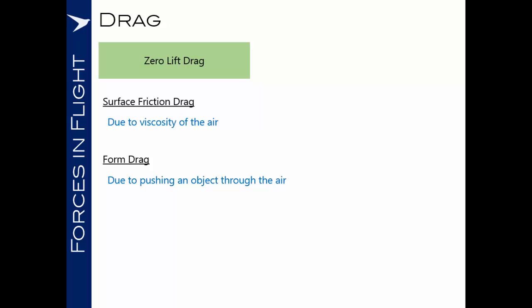The second form of zero lift drag is form drag. As we push an object through the air, the frontal surface area will cause a resistance of the air as the air is forced to move out of the way.